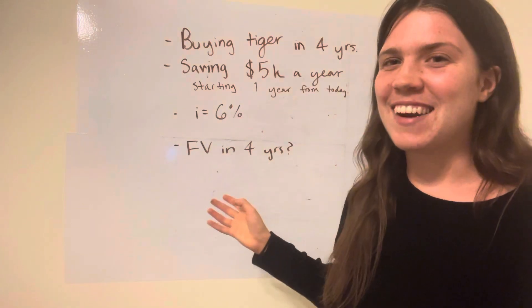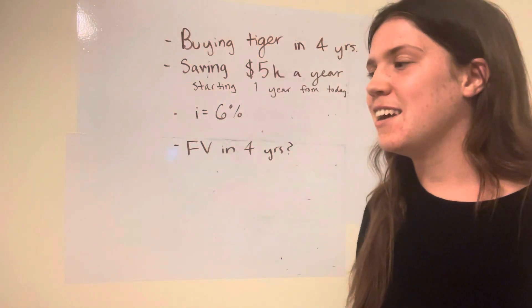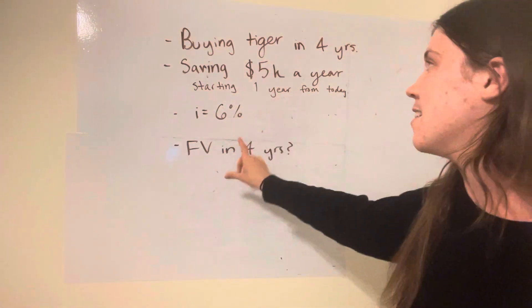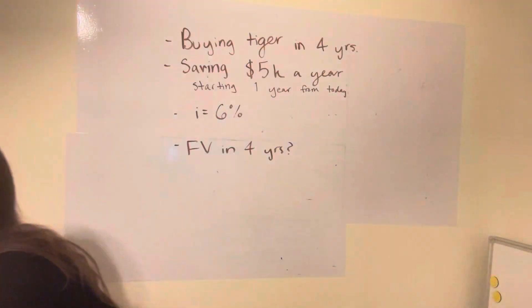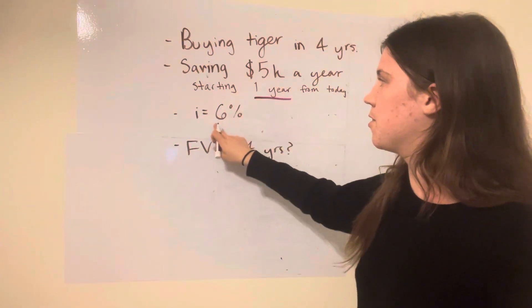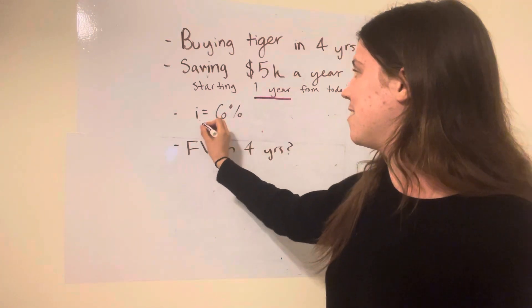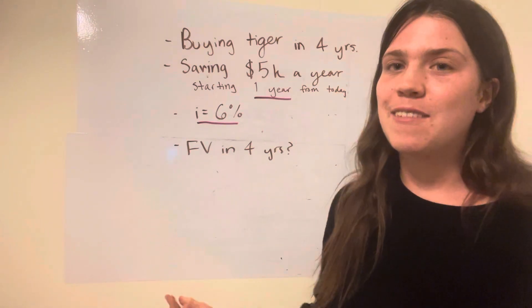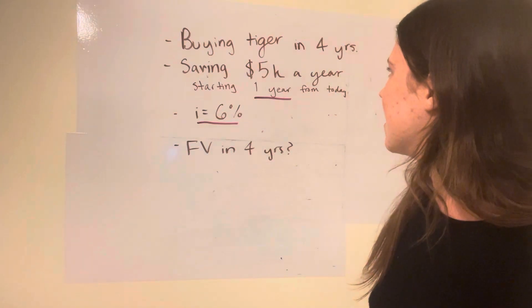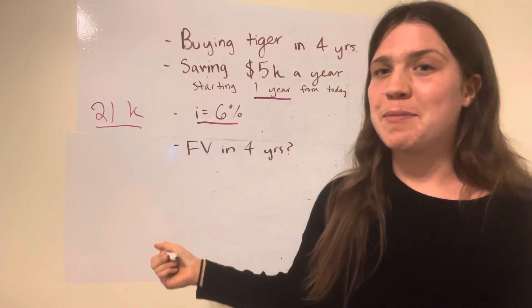For this example, we have a very fun thing that we're saving up for — we're saving up to buy a tiger in four years. Imagine you're a freshman; by the time you graduate, you want that tiger. So you're going to save $5,000 a year starting one year from today. This is your clue — this is how you know it's an ordinary annuity: it's one year from today. The bank is giving us a six percent interest rate. How much are we going to have in four years? Can we buy that tiger? Let's say the tiger is $21,000. Will we get that much back? Let's see.